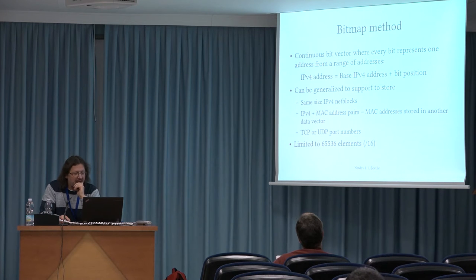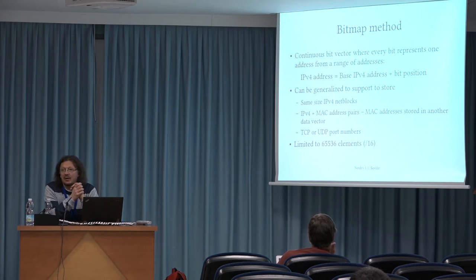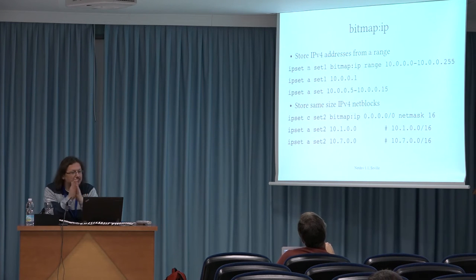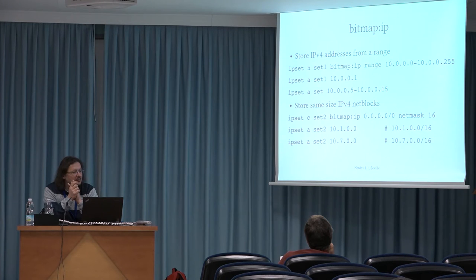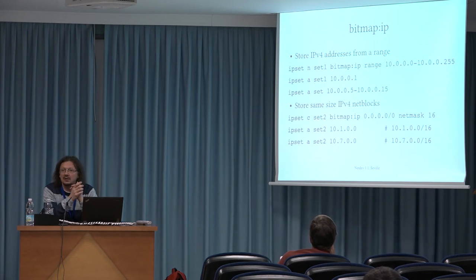The maximum number of elements in a bitmap type of set is limited to 65,536, which can cover the full IPv4 address space in /16 size net blocks, or the full possible TCP or UDP port numbers. The bitmap IP type can be used to store just IPv4 addresses or same-size IPv4 net blocks from a range. When we define the set, we must define the range we want to store in the set, either in range notation or net block notation.